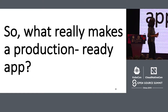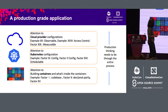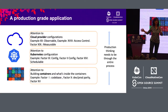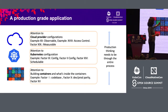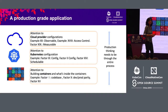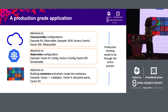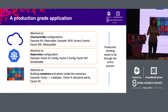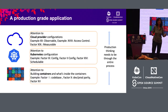What really makes a production-ready app ready? There are three things we touched on — our 12 plus seven factors are covered in each one of these categories: how you are building the containers (trusted, small image), how you are configuring Kubernetes to host your containers, and finally the cloud provider you're using — the cloud provider should provide all the capabilities you need to run your application in production.